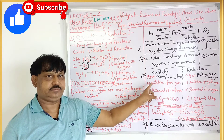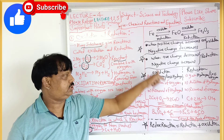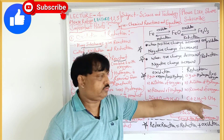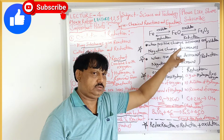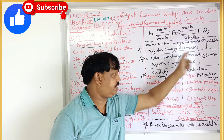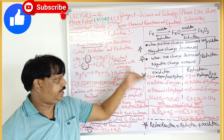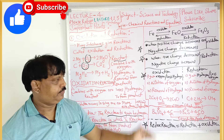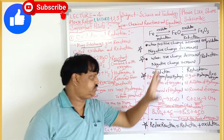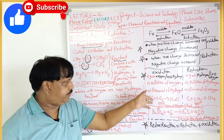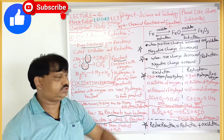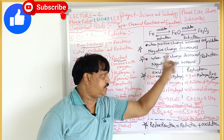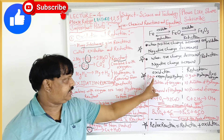Remember: gain of oxygen is oxidation; loss of hydrogen is oxidation. Loss of oxygen is reduction; gain of hydrogen is reduction. Addition of oxygen is oxidation; addition of hydrogen is reduction. Removal of hydrogen is oxidation; removal of oxygen is reduction.